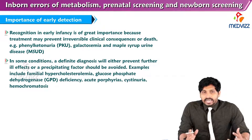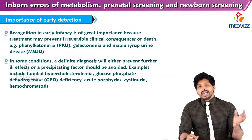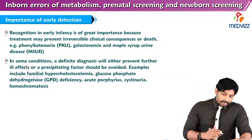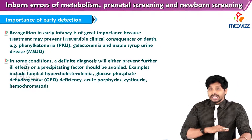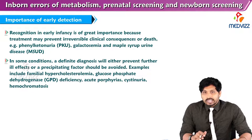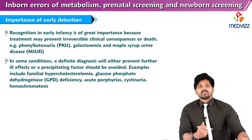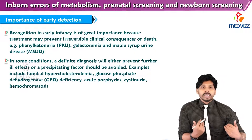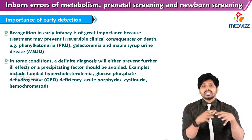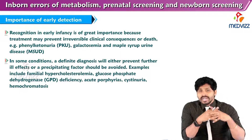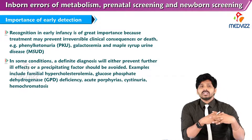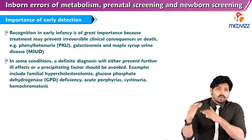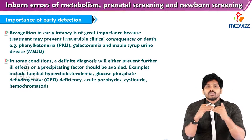Recognition in early infancy is of great importance because treatment may prevent irreversible clinical consequences or death. For example, phenylketonuria, galactosemia, and maple syrup urine disease. In some conditions, a definite diagnosis will either prevent further ill effects or the precipitating factor should be avoided to manage these conditions.